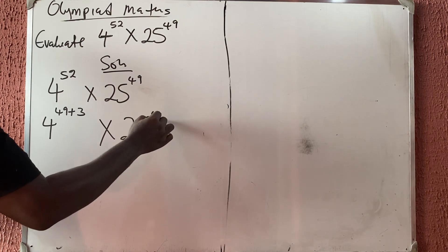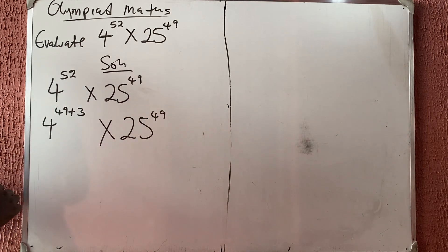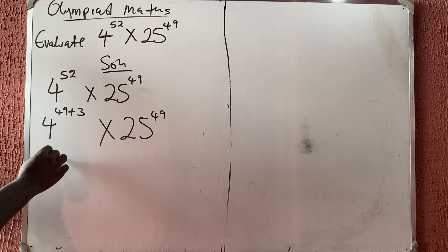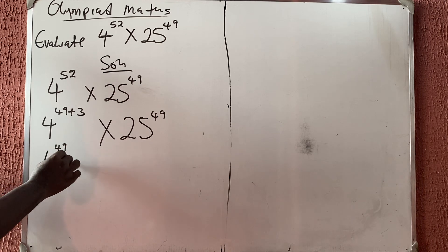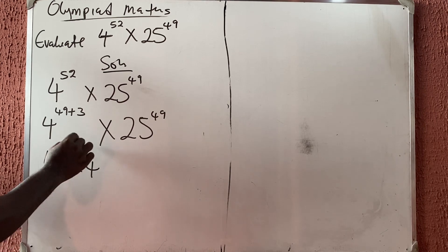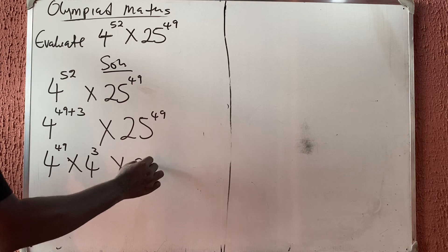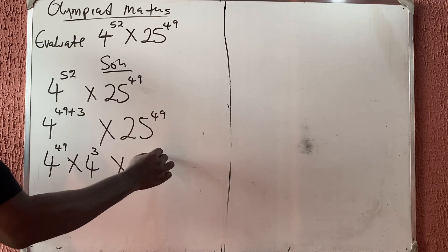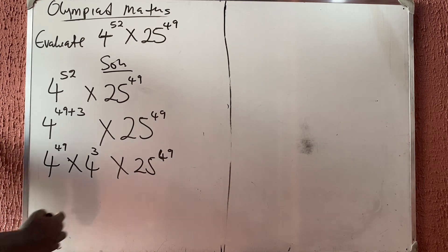So times 25 raised to power 49. Now let me share them according to indices. This is 4 raised to power 49 times 4 raised to power 3, then times 25 raised to power 49.